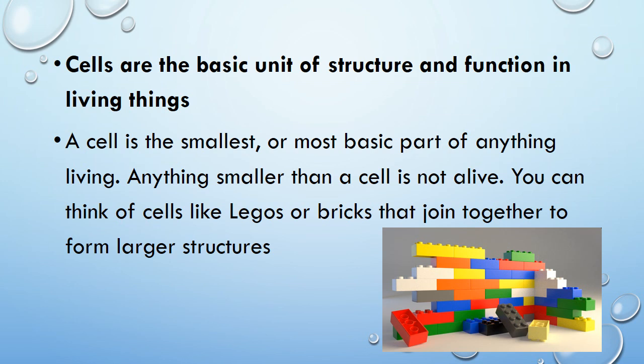The next part of cell theory: cells are the basic unit of structure and function in living things. We've already gone through this word by word. The cell is the smallest or most basic part of anything living — anything smaller than a cell is not alive. You can think of cells like Legos or bricks: each individual Lego is a cell, and when you put all the Legos together you can build all kinds of different structures. Put cells together and they join to form larger structures.